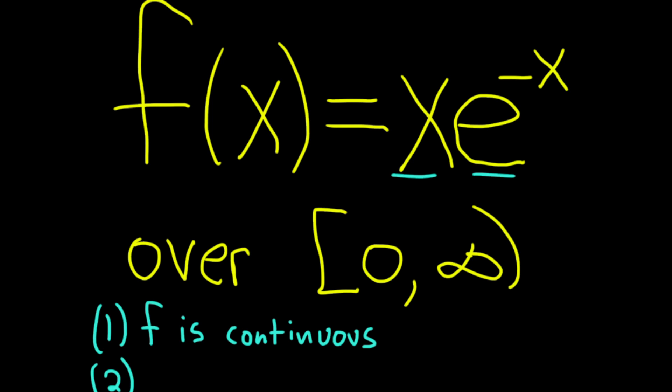Two, f is non-negative, which is also true on this interval. Also very easy to see. x is always going to be greater than or equal to zero, and e to the negative x is always going to be positive. So the product will always be greater than or equal to zero.